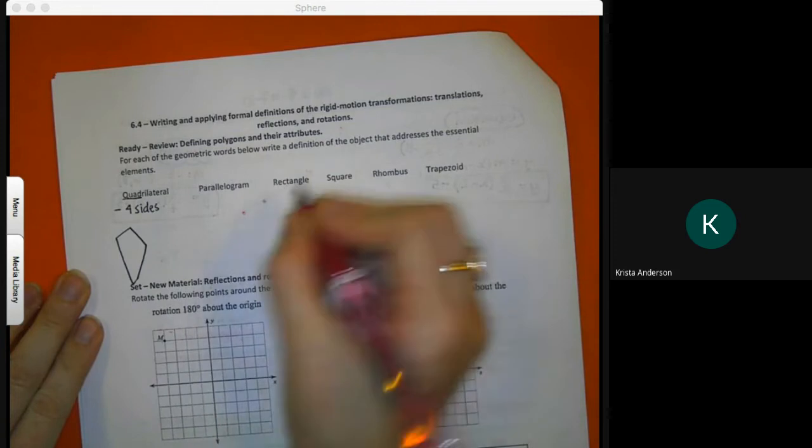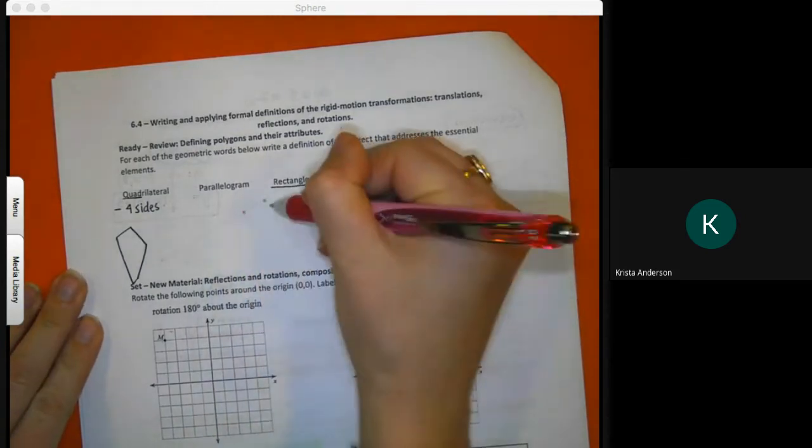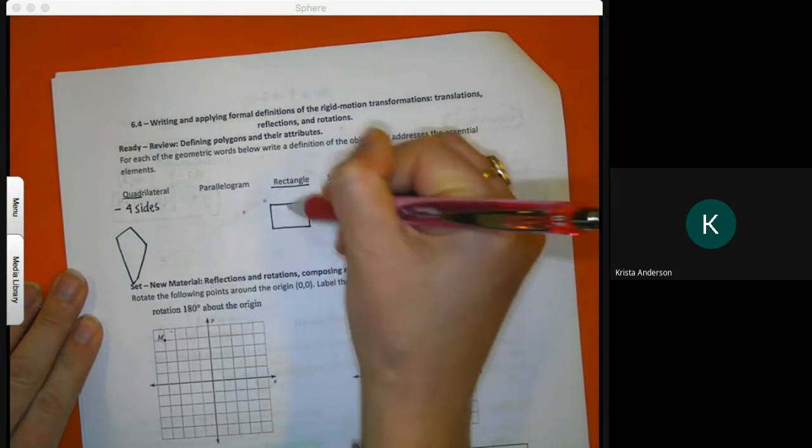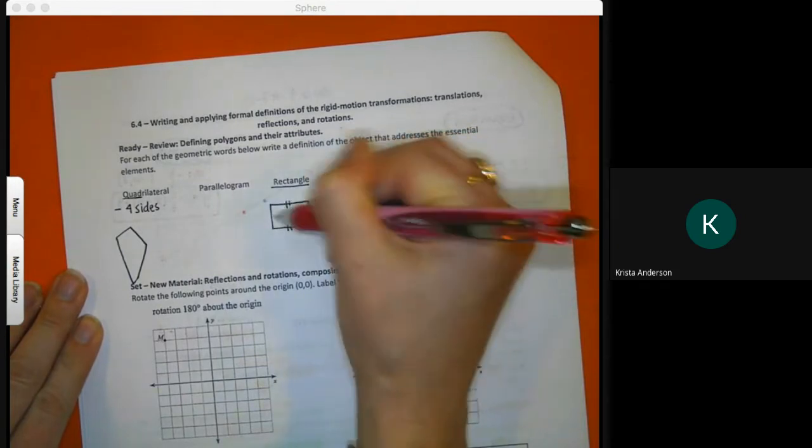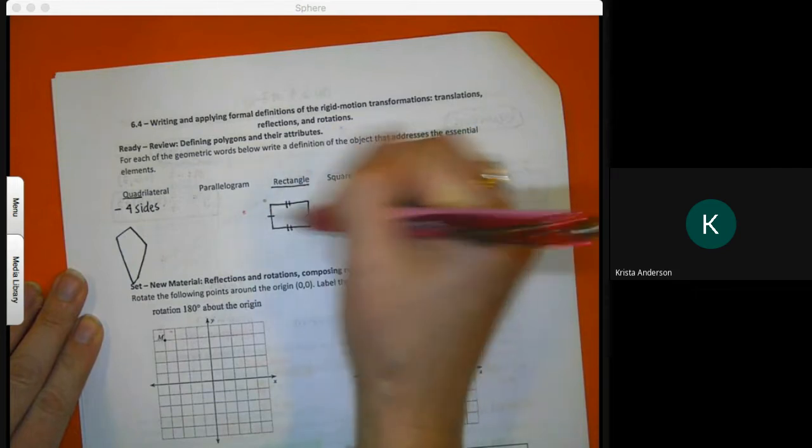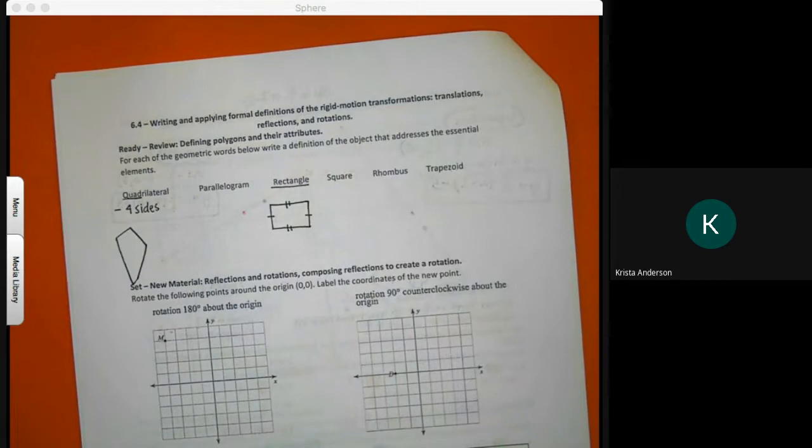I'm gonna do rectangle next. Rectangle we've all seen before. So we have two long sides that are equal, two short sides that are equal.